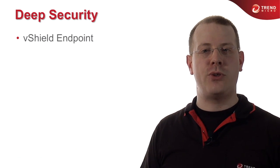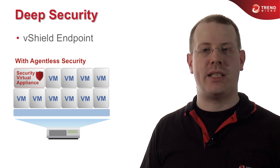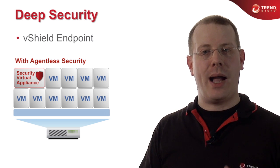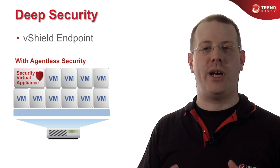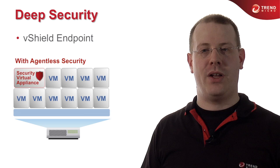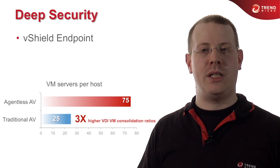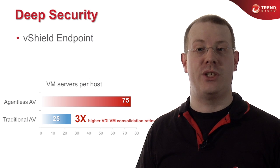Leveraging VMware's vShield Endpoint API in combination with Trend Micro's Deep Security allows you to provide agentless anti-malware. With agentless anti-malware, the hypervisor provides the functionality of the traditional anti-malware agent. So you don't need an agent installed in each and every virtual machine — instead the hypervisor is providing that service, and you no longer need to replicate those resources.